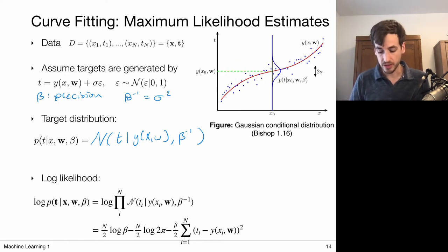So now I can choose my model parameters as to optimize the likelihood, and I hope that I recover the true underlying data distribution.